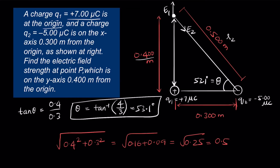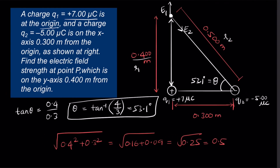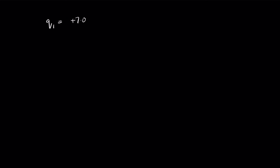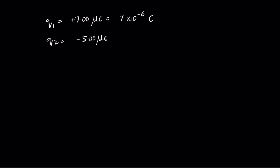With the data collected: r1 (distance from q1 to the point) = 0.400 meters, r2 (distance from q2 to the point) = 0.500 meters, and the angle θ = 53.1 degrees. Note that if this angle is 53.1°, then the corresponding angle at the other position is also 53.1 degrees.